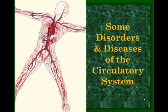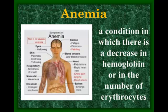Now we'll discuss diseases of the circulatory system. Anemia is a condition the speaker has personally experienced. It can be caused by a decrease in hemoglobin — which enables red blood cells to carry oxygen — or a decrease in the number of erythrocytes, which are the red blood cells that carry oxygen. In either case, the result is tiredness because the cells aren't getting enough oxygen to perform aerobic cellular respiration, which produces ATP, the energy currency.